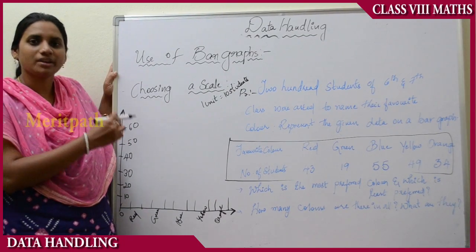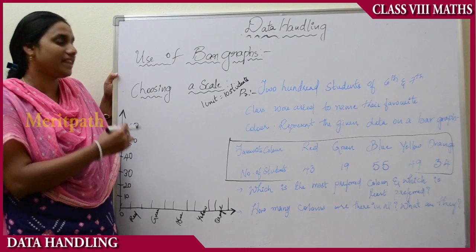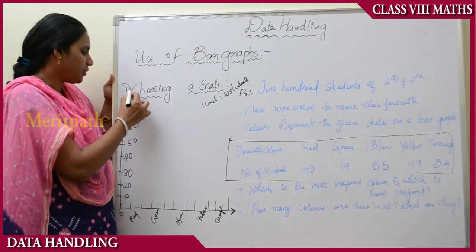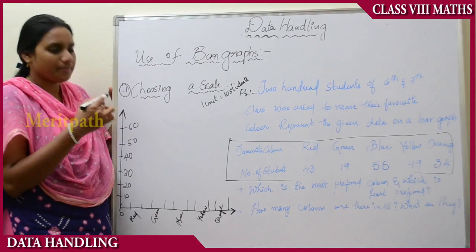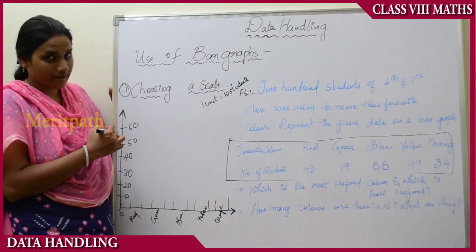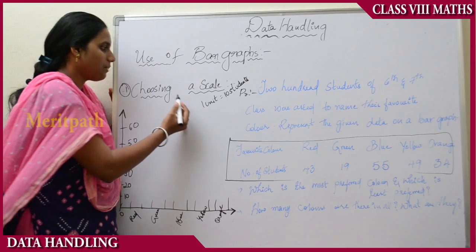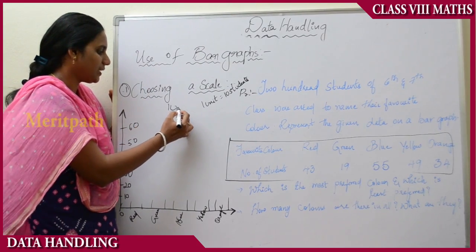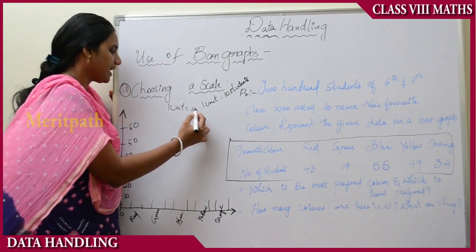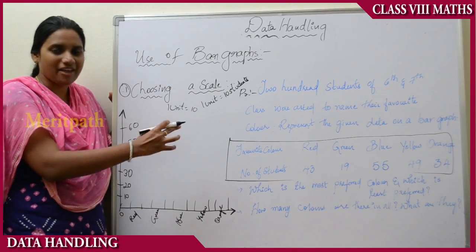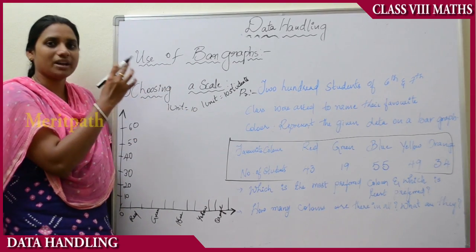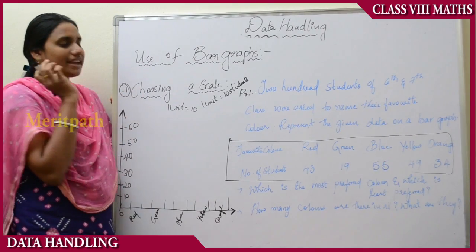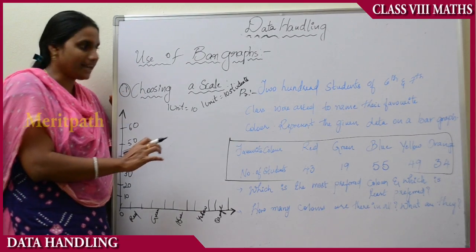Now let us see how to plot data with the help of bar graphs. The first step is choosing a scale. Previously I explained how to draw bar graphs using a scale — that means we take 1 unit equal to 10 students. Based on the question, we have to assume or analyze the unit scale. Now I have taken one problem in order to understand.